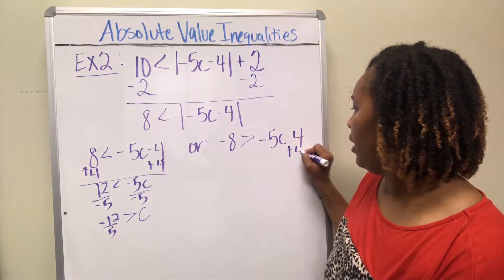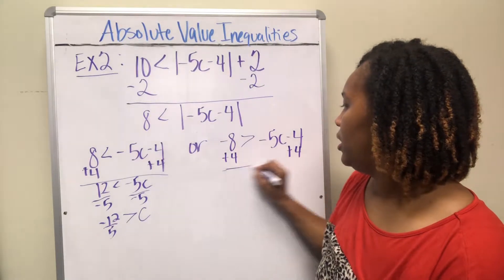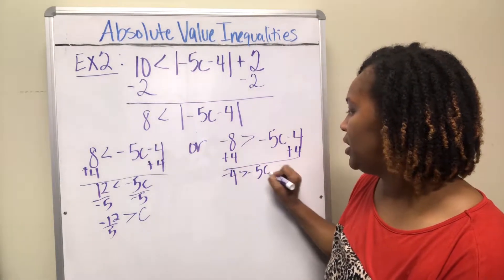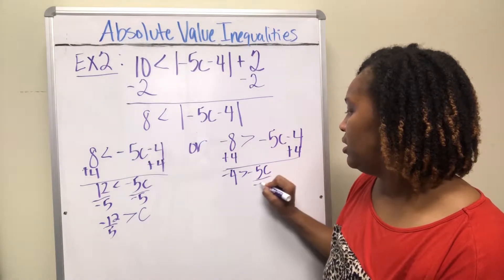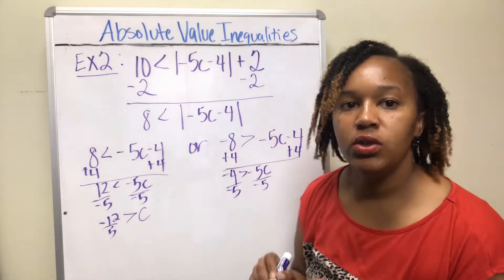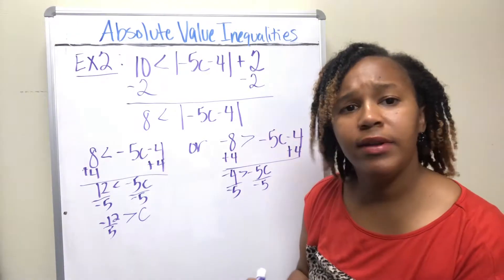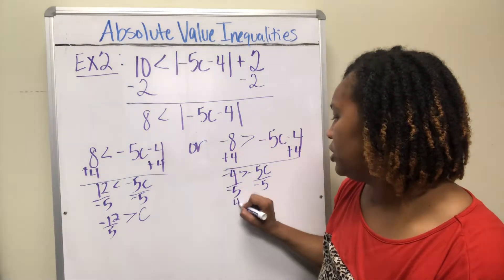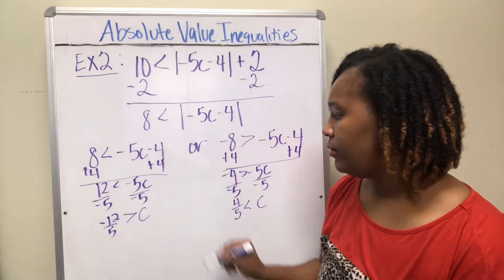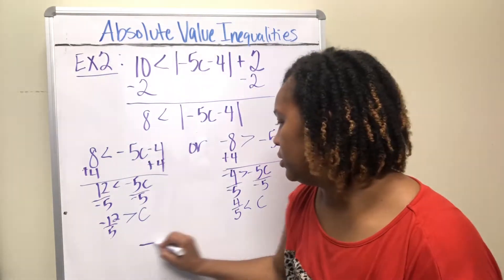For the second inequality, add 4 to both sides to get −4 > −5c. Divide by −5 and since you're dividing by a negative number, change the direction of the inequality symbol. Then graph both solutions on the number line.